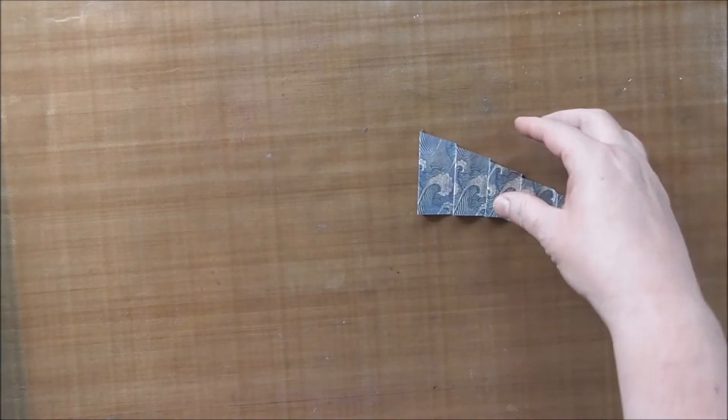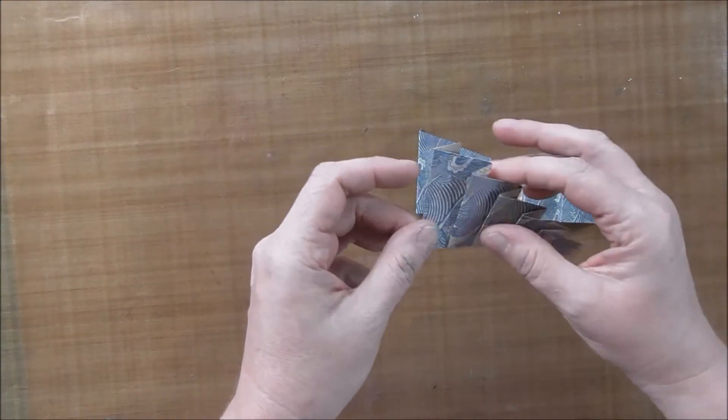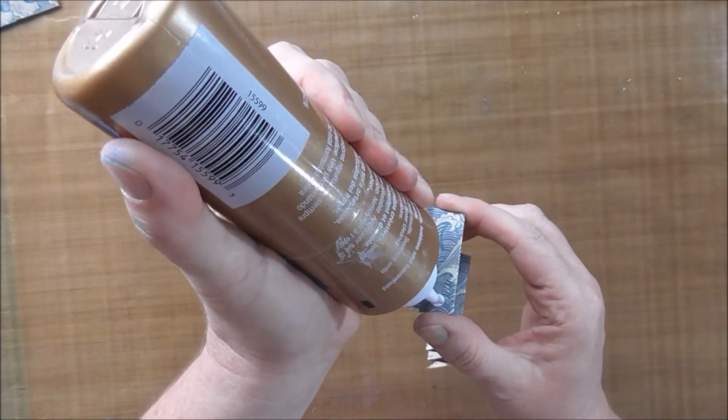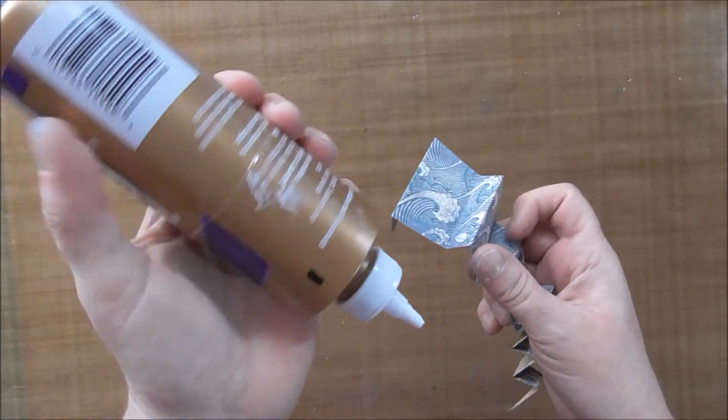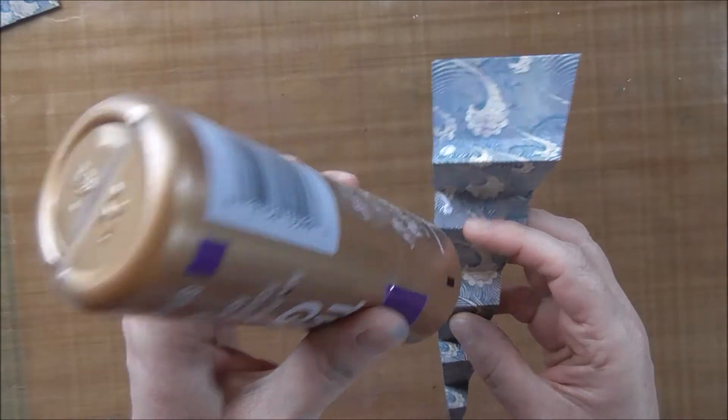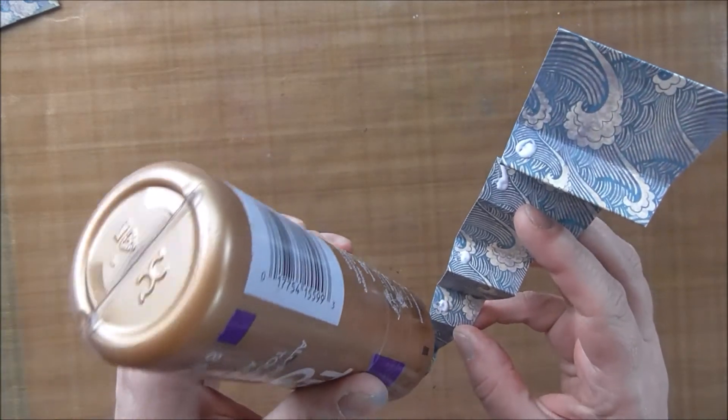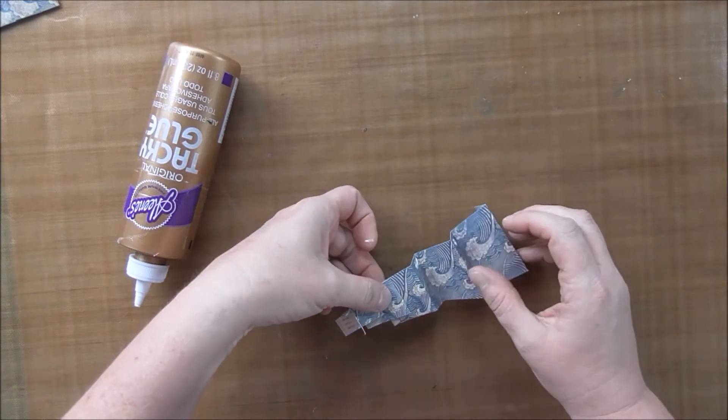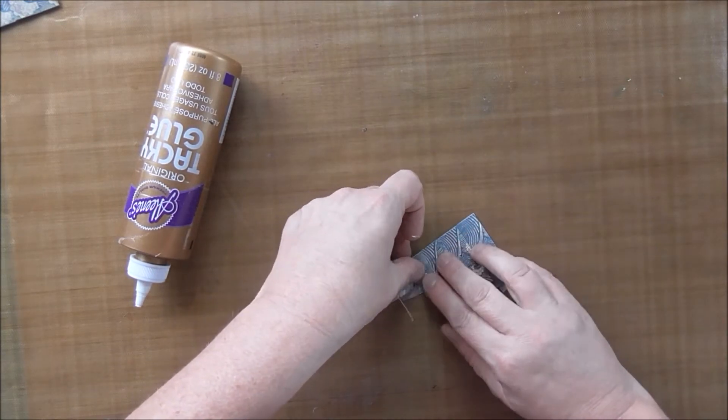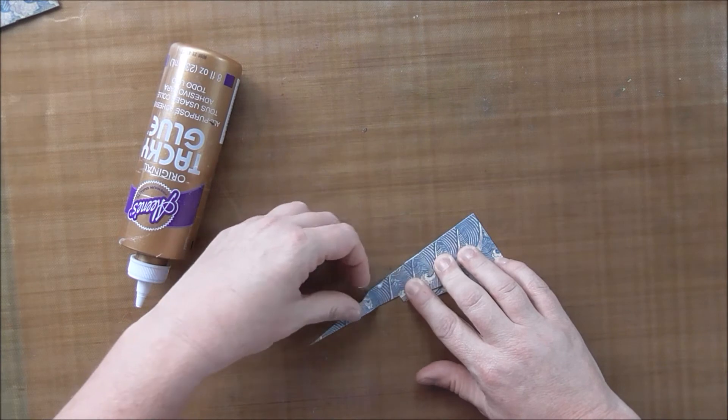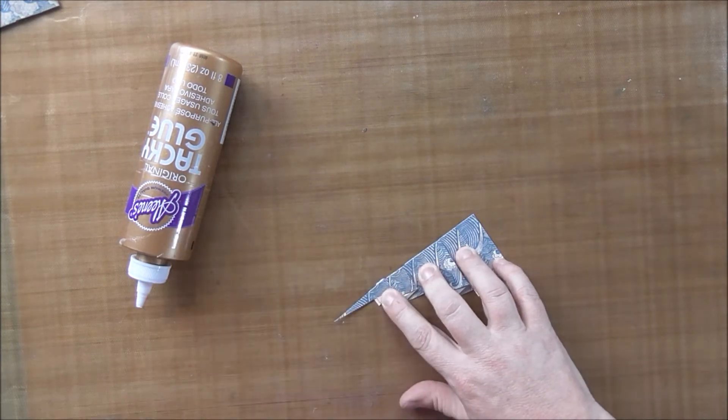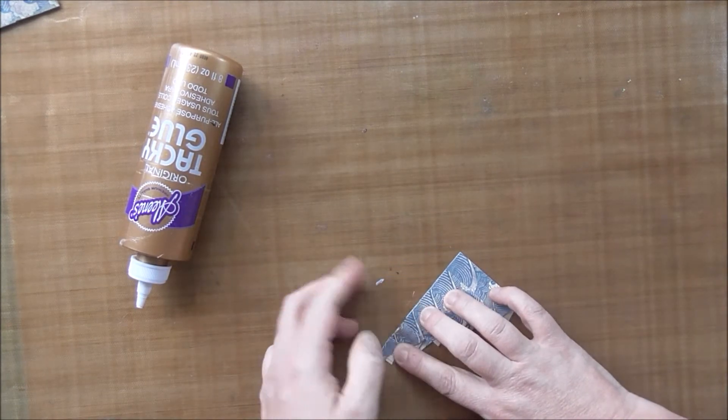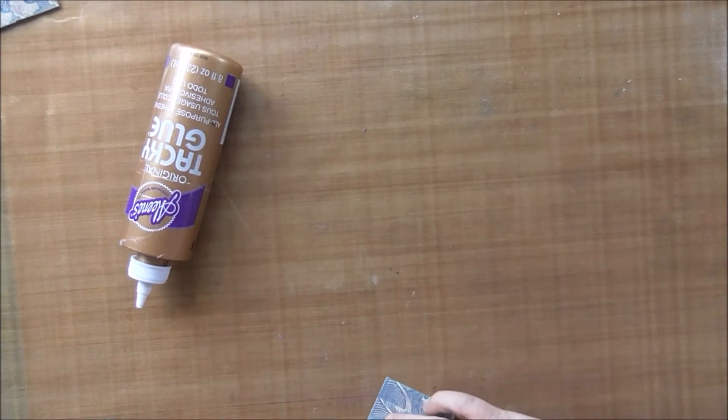So what you do to make them all kind of stick together like this, which will become important later, is we're going to put a little tiny bit of glue on all these small ones, these small folds. And then you just fold them up. And I am just going to stick this under the mat so it can dry while we're working on other things.